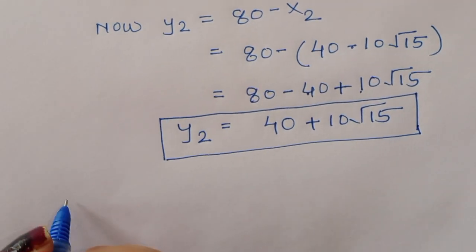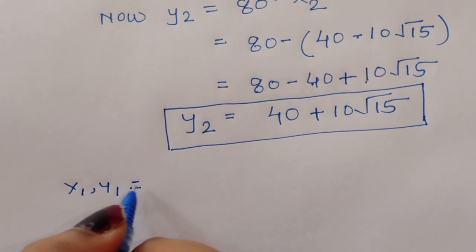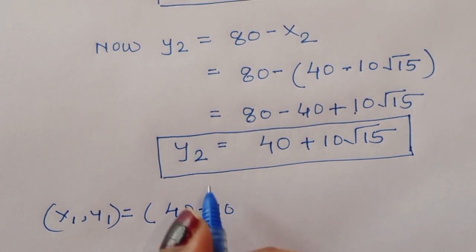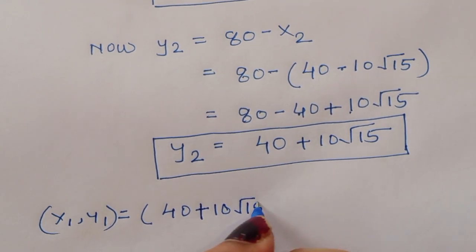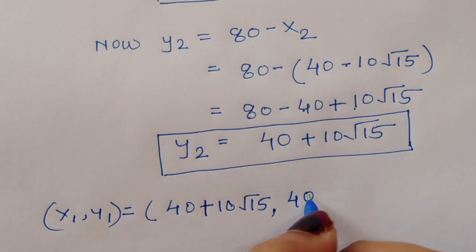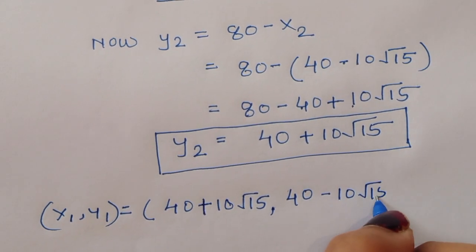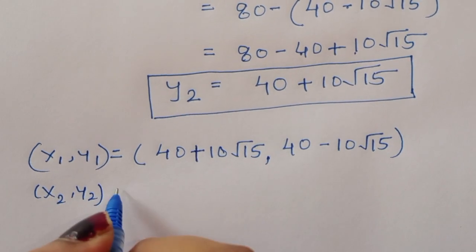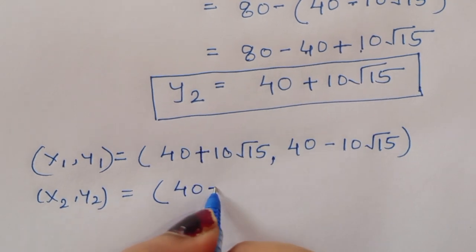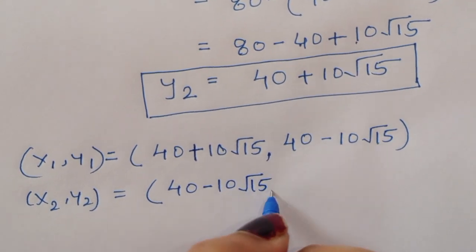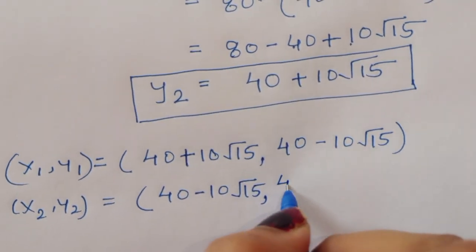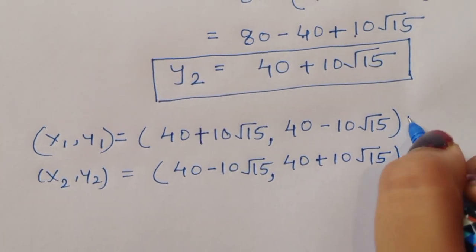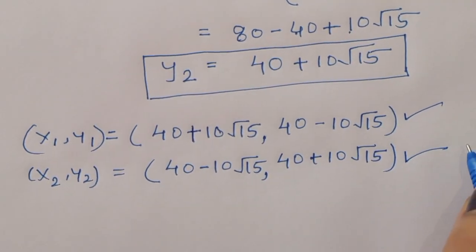So the solutions are: (x₁, y₁) = (40 + 10√15, 40 − 10√15) and (x₂, y₂) = (40 − 10√15, 40 + 10√15). This is the complete solution. Thank you.